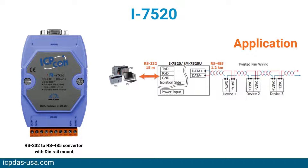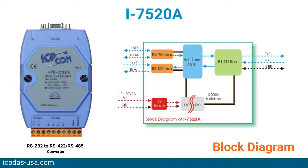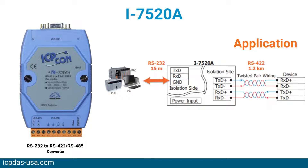The RS-485 standard overcomes these limitations by using differential voltage lines for data and control signals, which transparently converts RS-232 signals into isolated RS-485 signals with no need to change any hardware or software. The I-7520 lets you easily build an industrial grade, long distance communication system using standard PC hardware.